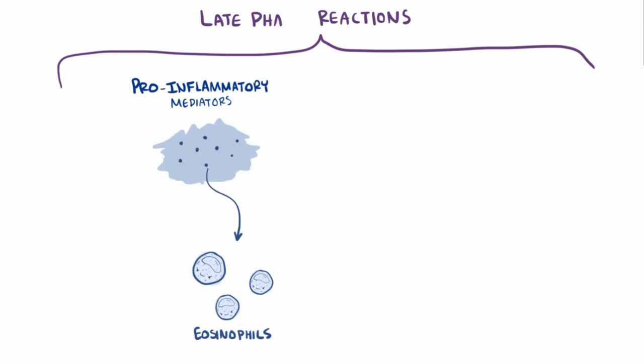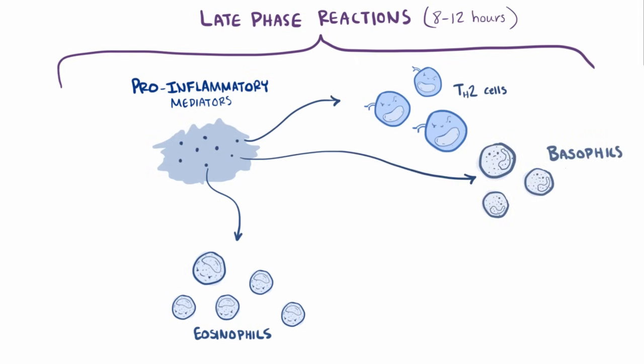There are also late phase reactions, which happen 8 to 12 hours after the second exposure, where even more immune cells like TH2 cells, eosinophils, and basophils, yet another type of granulocyte, are recruited to the site where the allergen is located, because of the cytokines and pro-inflammatory molecules produced during that early phase.